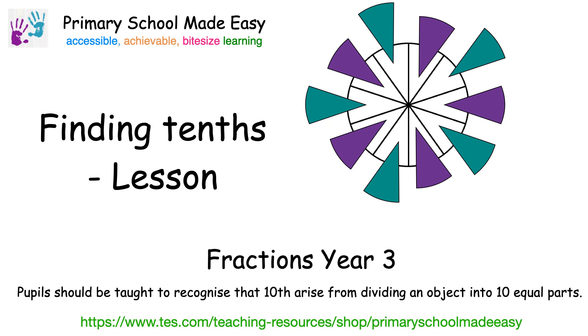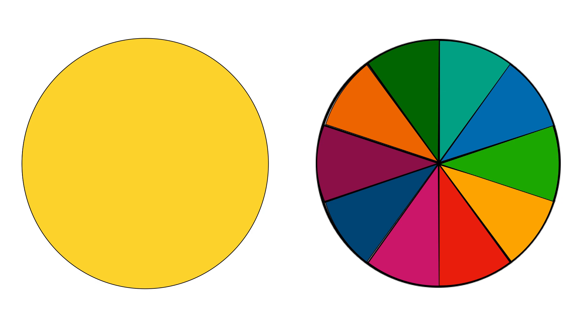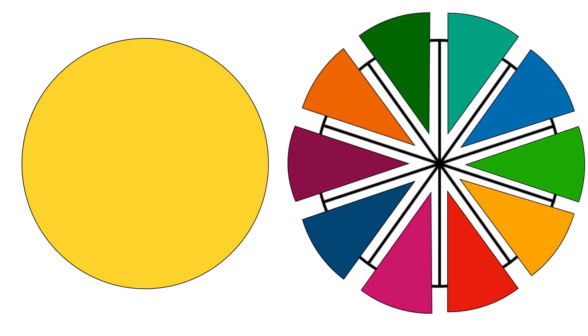Finding tenths. We can create tenths by dividing a shape into ten equal parts. Each part is the same size and one part is one tenth.